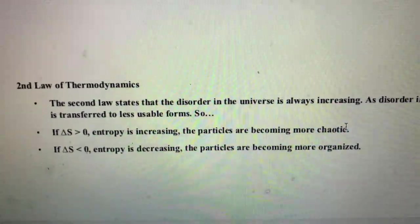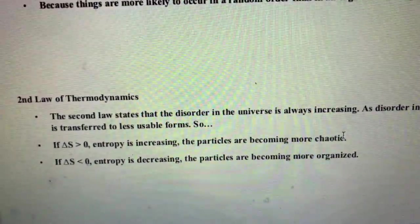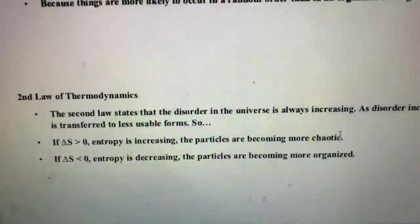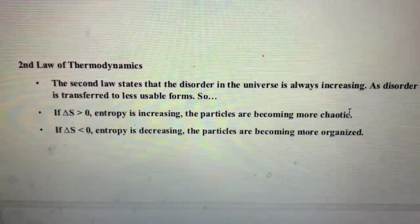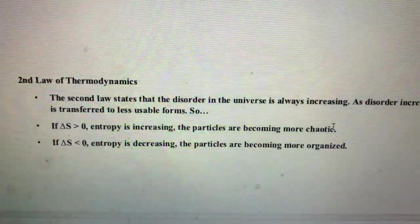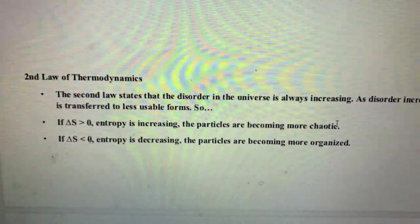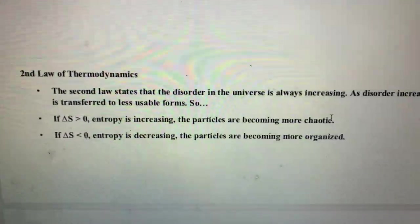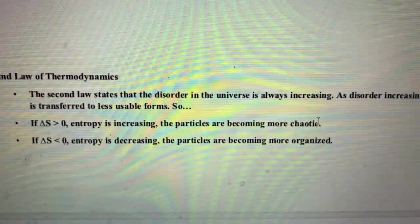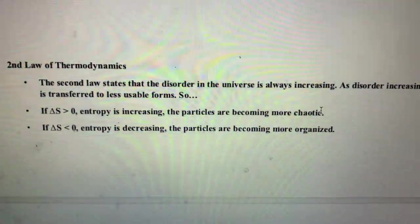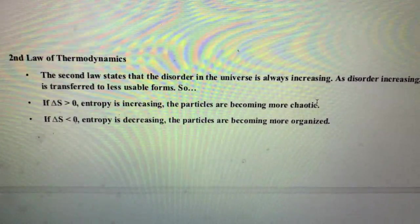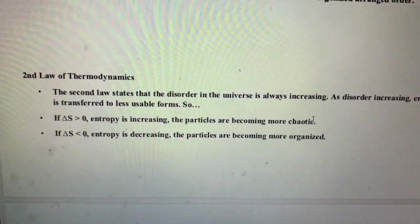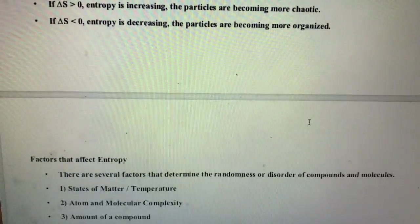The particles that you are forming are becoming technically more chaotic, more random, and that means that the entropy is going up. If we find that it is a negative number, it means that the entropy is going down. So actually the particles in that reaction are becoming more organized, and of course this can absolutely happen.